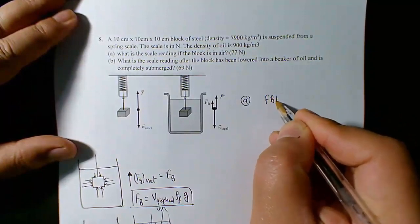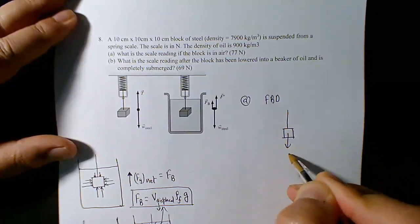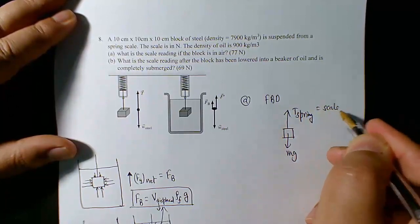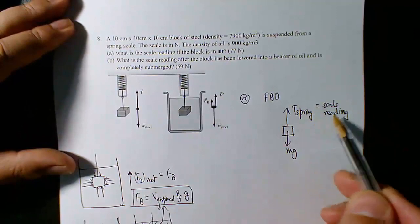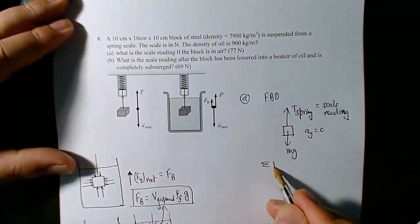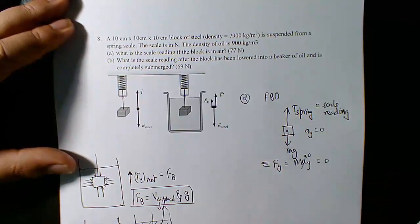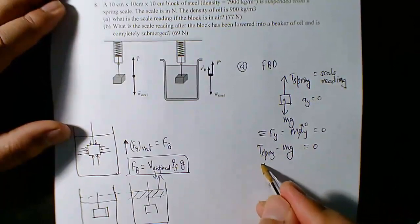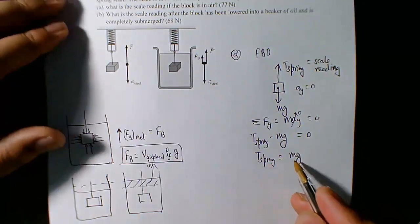Let's draw the free body diagram when the block is suspended in air. You have mass times gravity downward, and the tension in the spring (T_spring) upward — that tension is the scale reading. Since there's no acceleration in the y direction, applying Newton's second law gives T_spring minus mg equals zero. So the spring scale reading equals mg, the weight of the block. Mass isn't directly given, but volume is: 0.1³ m³, and density of steel is 7900 kg/m³.